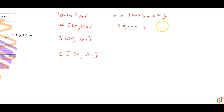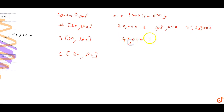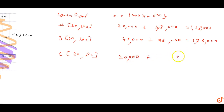Evaluating at corner points: at x equals 20, y equals 80, Z equals 20,000 plus 48,000 which comes to 68,000. At x equals 40, y equals 160, Z equals 40,000 plus 96,000 which equals 1,36,000. So the maximum value is 1,36,000.